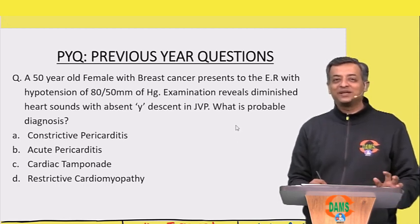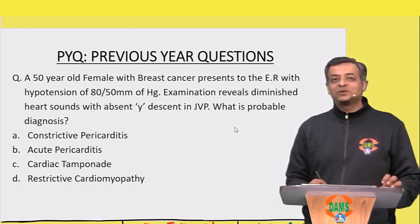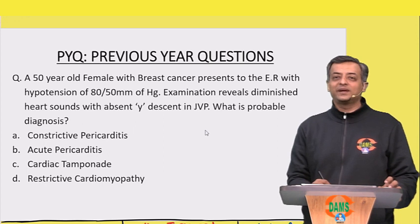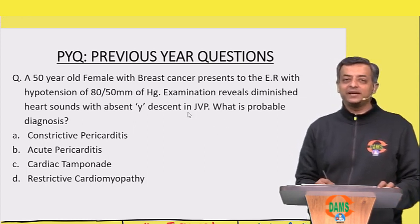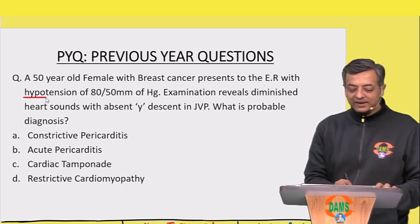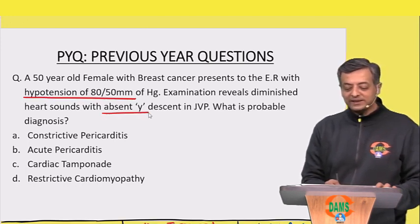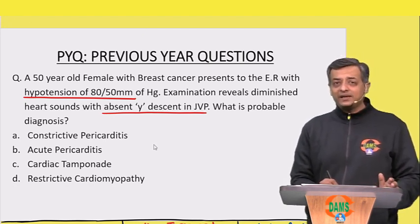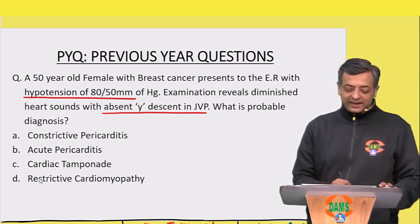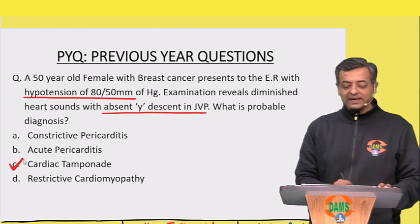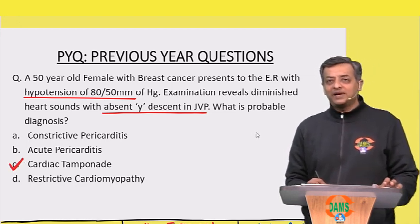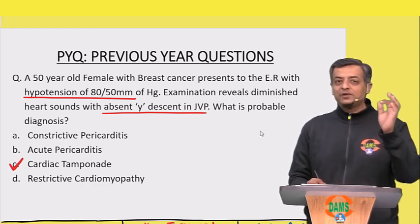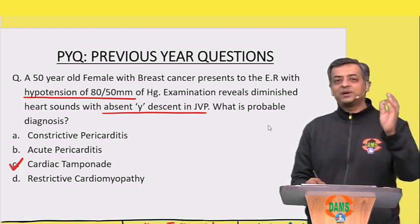You've done plenty of previous year questions, but most students approach them by reading that a 50-year-old female with breast cancer is presenting to the ER with hypotension, diminished heart sounds, and absent Y descent — and they jump straight to a probable diagnosis. By reading habit they may reach the correct answer of cardiac tamponade, but just reading and memorizing the answer means you can recall only that one particular topic.